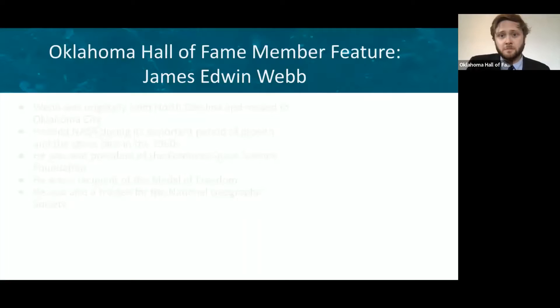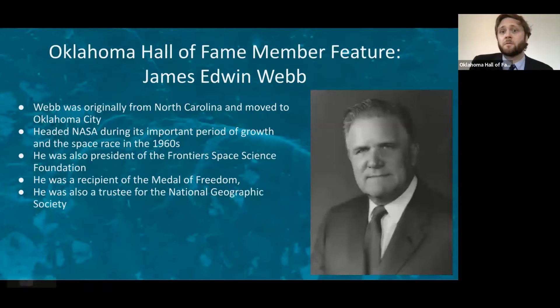And so today we are featuring Oklahoma Hall of Fame member James Edwin Webb. Webb was originally from North Carolina, but he moved to Oklahoma City. He headed NASA during its important period of growth and during the space race in the 1960s. So he was director when the Apollo missions were taking place in the mid-1960s. He was also president of the Frontier Space Science Foundation. He was a recipient of the Medal of Freedom. And he was also a trustee for the National Geographic Society.